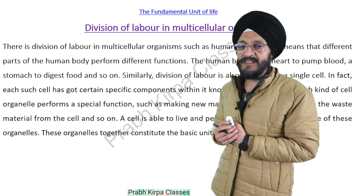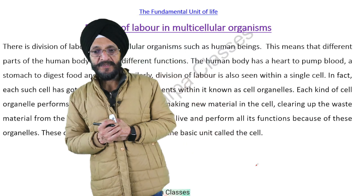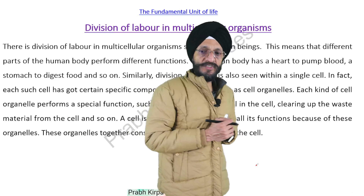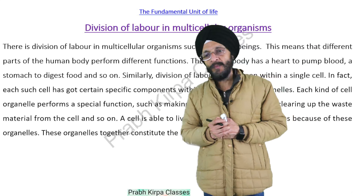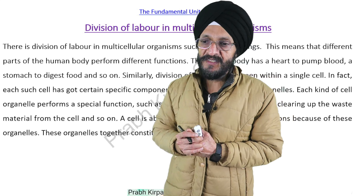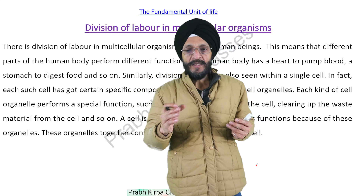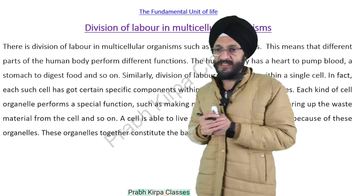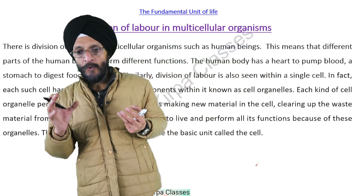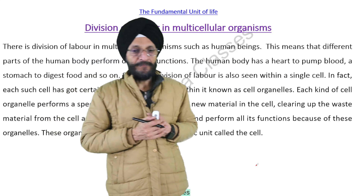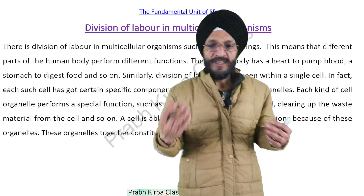The next point is division of labour in multicellular organisms. There is division of labour in multicellular organisms such as human beings. This means that different parts of the human body perform different functions. A human body has a heart to pump blood and a stomach to digest food, and so on.